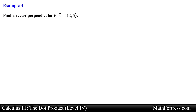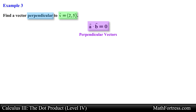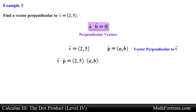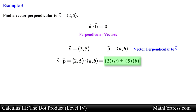Find a vector perpendicular to vector v. Here we have a planar vector and we are asked to find a vector that is perpendicular to it. Recall that two vectors are perpendicular if the dot product is equal to 0. Let's assume the vector perpendicular to vector v is vector p with x and y components equal to a and b respectively, and set the dot product between the two vectors equal to 0.